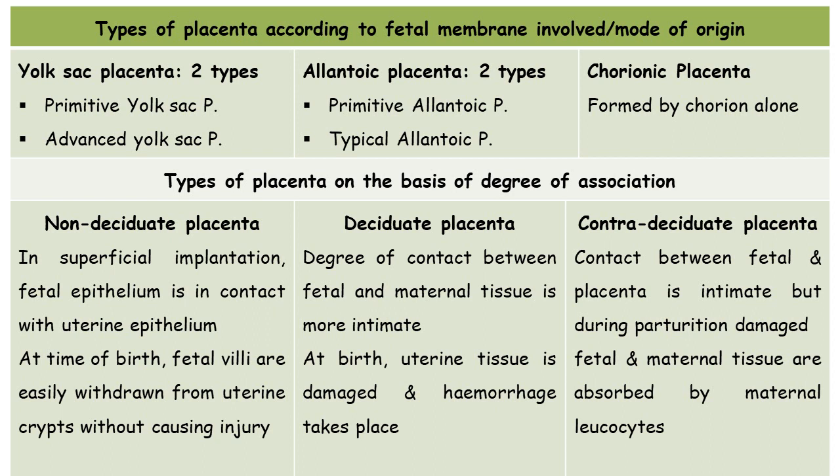The next type is contra-deciduate placenta. In this case also, the contact between the fetal and uterine tissue is intimate, just like in deciduate placenta. The difference is that during parturition, both fetal and uterine tissues are damaged, but they are absorbed by the maternal WBCs (leucocytes). Since the entire damaged part is absorbed internally, there will be no hemorrhage or bleeding. This is a modified deciduate type of placenta and is found in the bandicoot and talpa.